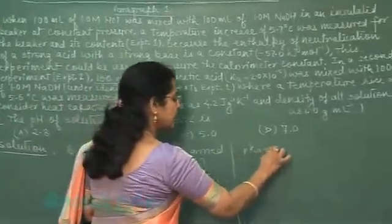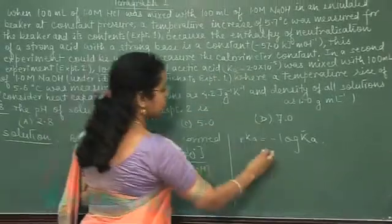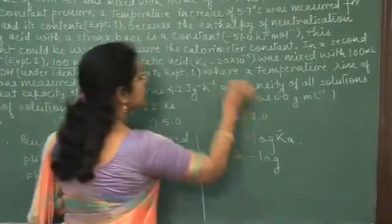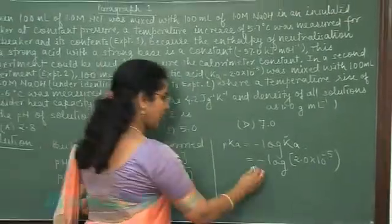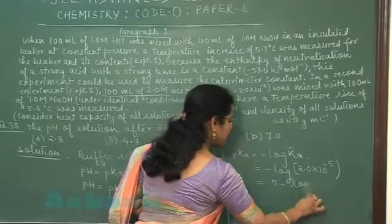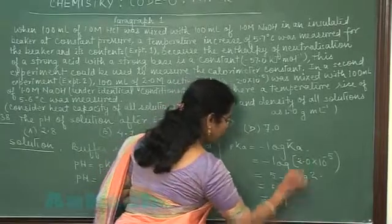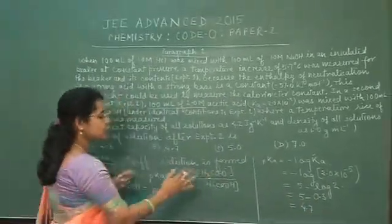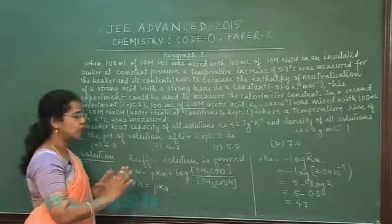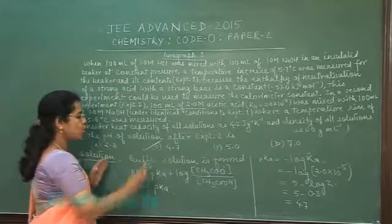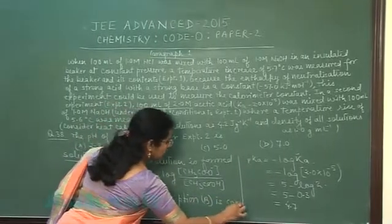So pH of this buffer solution will be equal to pKa of the solution. And pKa is equal to negative log of Ka. In this question, the value of Ka is given. So Ka is 2.0 into 10 raised to power minus 5, or this is equal to 5 minus log 2, that is 5 minus 0.3, and it is equal to 4.7. So after experiment number 2, the solution formed is buffer solution and pH of this buffer solution will be equal to 4.7. So option B is the correct answer. B is the correct answer of question.